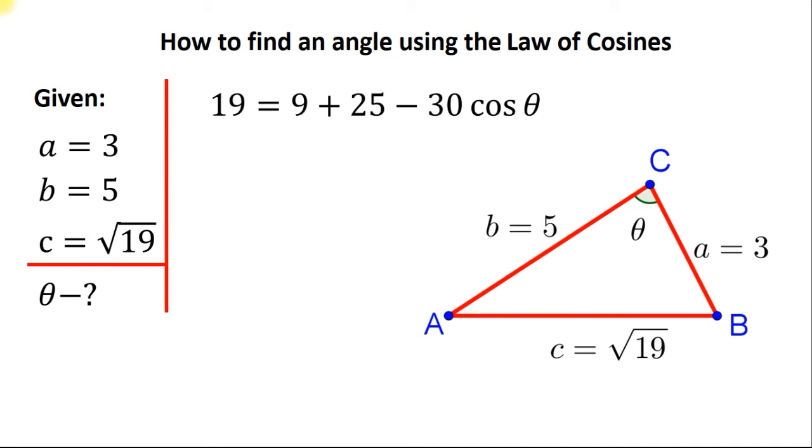Now we have to do some algebra. 9 plus 25 is equal to 34. Subtract it from both sides of the equation. On the left hand side we obtain 19 minus 34 that equals to negative 15. And only this negative term stays on the right hand side of the equation. So we get the following equation. We should divide both sides of it by negative 30.